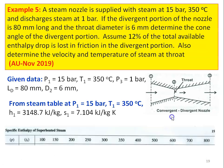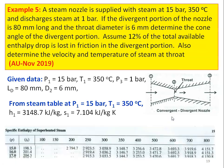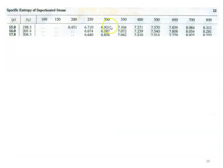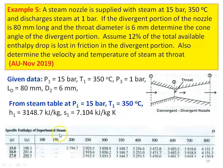From the steam table at 15 bar, 350°C (superheated steam): H1 = 3148.7 kJ/kg and entropy S1 = 7.104 kJ/kg·K.